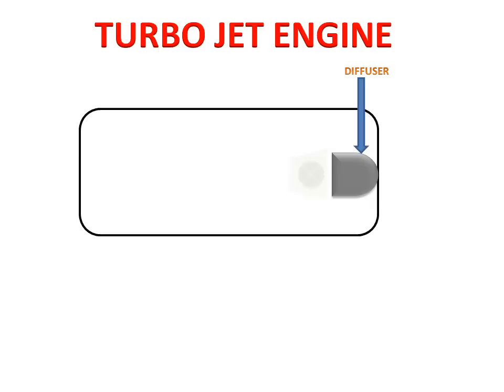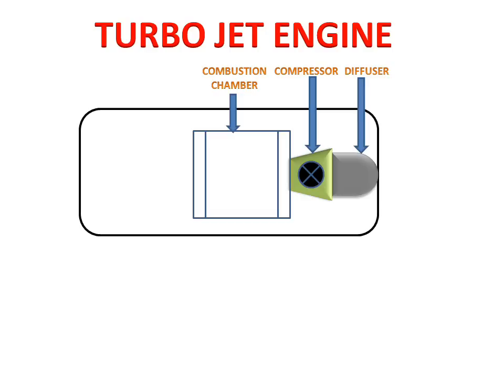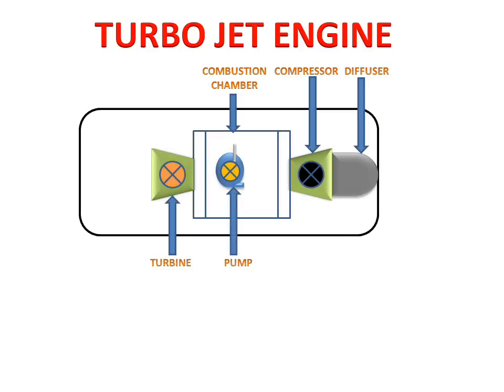We have a diffuser. A compressor is attached to the diffuser. Then we have a combustion chamber. We have a pump. Then we have a turbine, and lastly we have a nozzle. These are the parts of the turbojet engine.